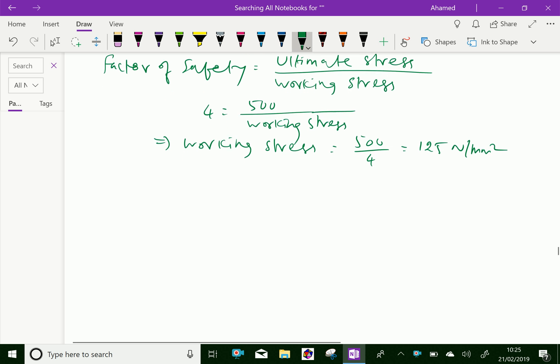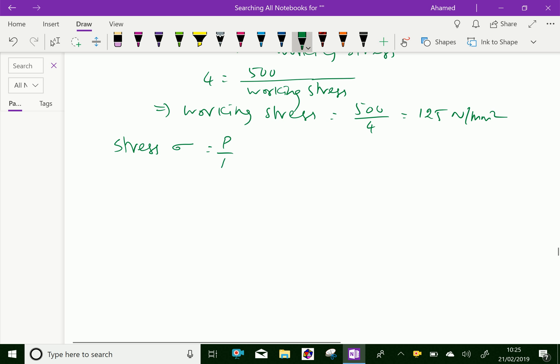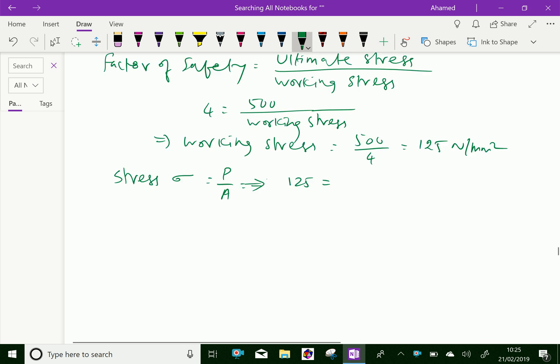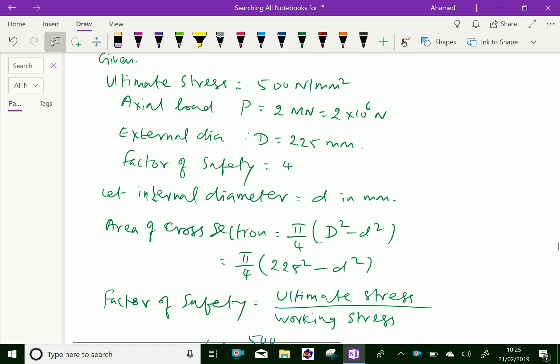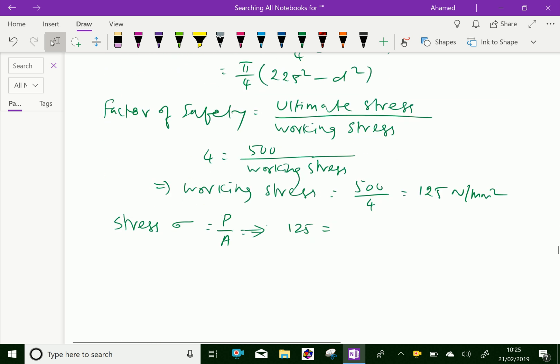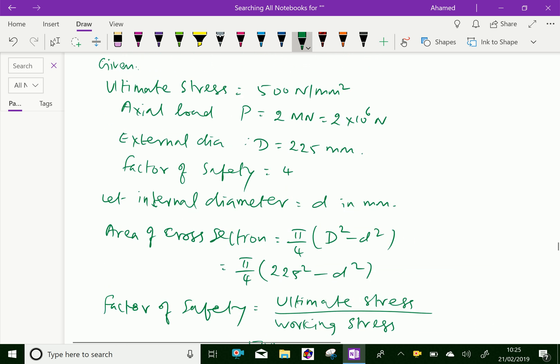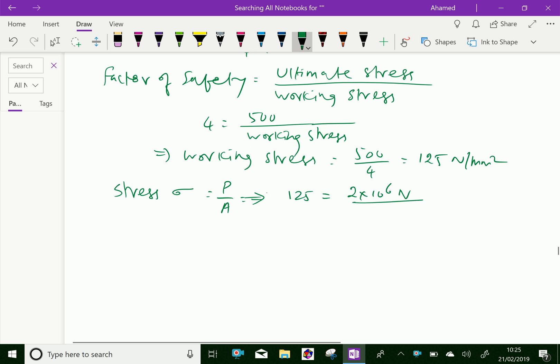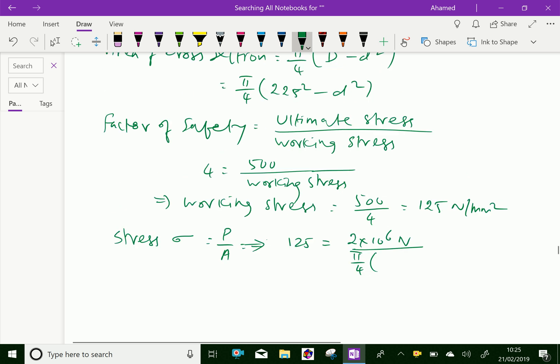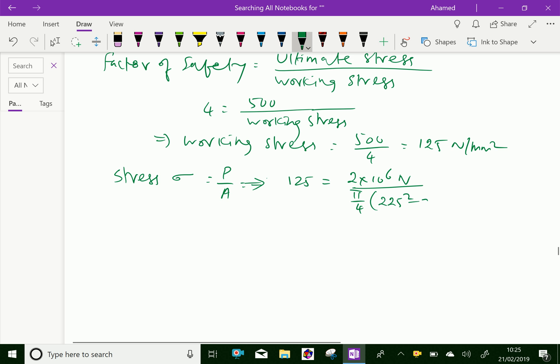Now we know that stress σ equals P by A. The stress we have now is 125 equal to the axial load 2 into 10 power of 6 newton over the cross area π by 4 times 225 squared minus d squared.